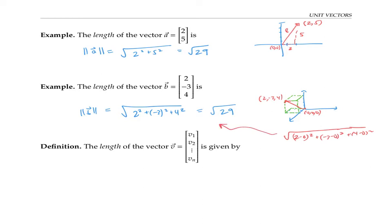In general, the length of a vector v with n entries v₁ through vₙ is given by taking the square root of the sum of all those entries squared.